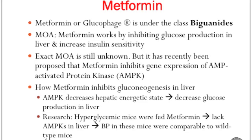The drug chosen for type 2 diabetes is metformin (Glucophage), which is under the first class of biguanides. The mechanism of action of metformin is to work by inhibiting glucose production in the liver and increasing insulin sensitivity. However, the exact mechanism of action is still unknown, but it has recently been proposed that metformin inhibits gene expression of AMPK (AMP-activated protein kinase).